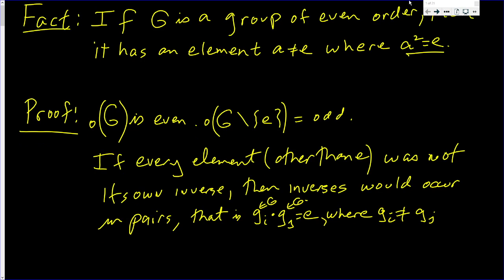But G minus E has an odd number of elements. How can we group this odd number of elements into pairs? We can't group—or let me not use the word group. We can't pair off an odd number of elements.